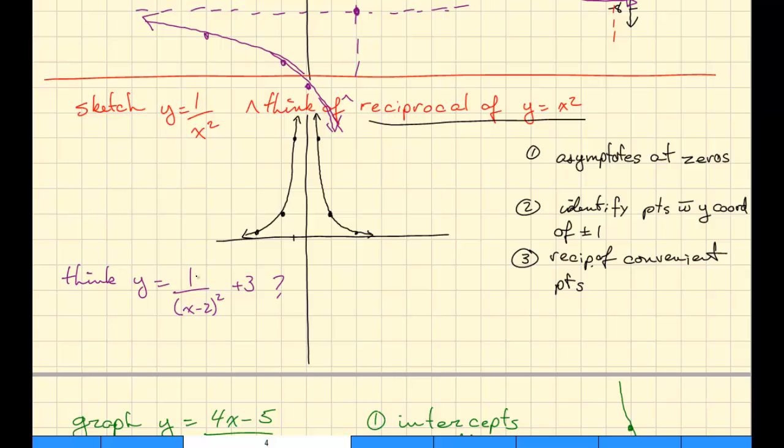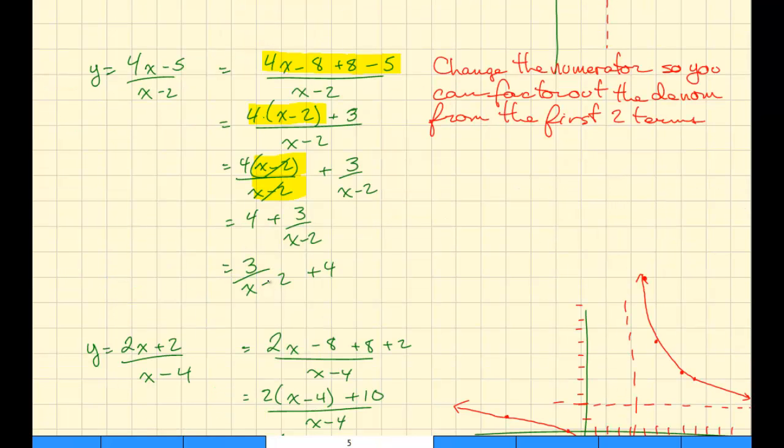What might happen if we had 1 over (x minus 2) squared plus 3? What does this minus 2 do? Well, hopefully you know. It just moves the function to the right 2. And what does the 3 do? Just moves it up 3.